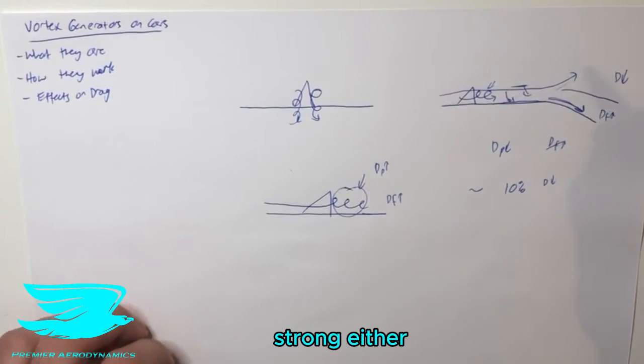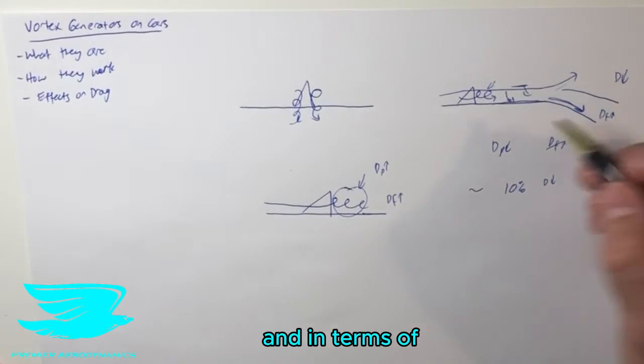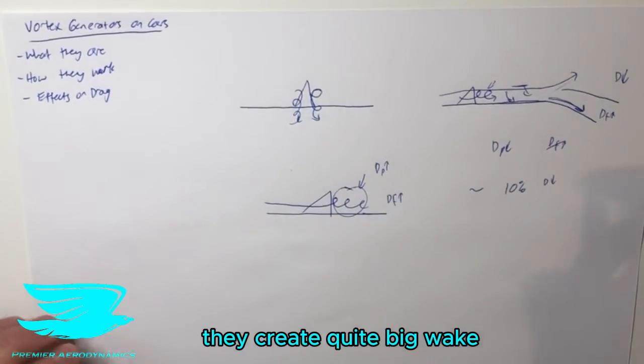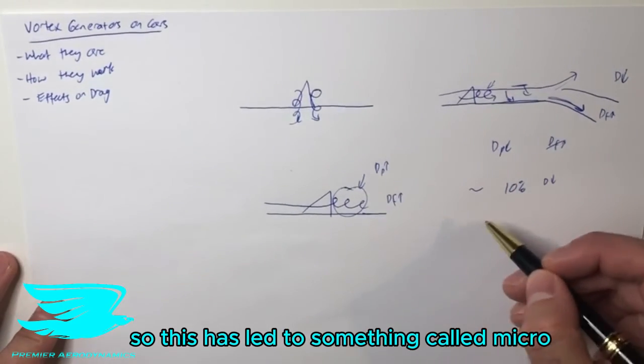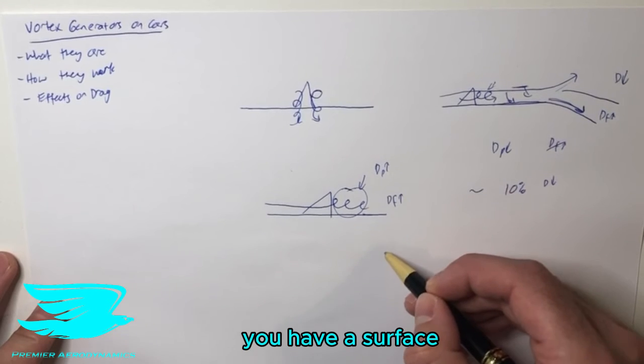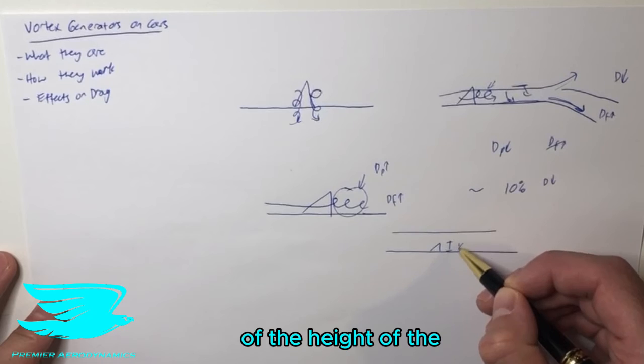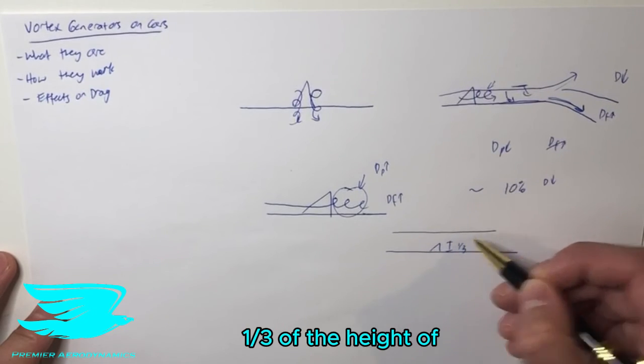And in terms of the height of these vortex generators, because they're protruding out so far, as I mentioned, they create quite a big wake. So this has led to something called micro-vortex generators, which is if you have a surface and you have the boundary layer over here, they only pop up about one-third of the height of the boundary layer.